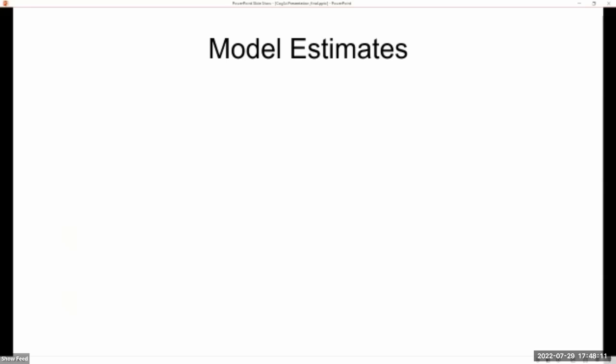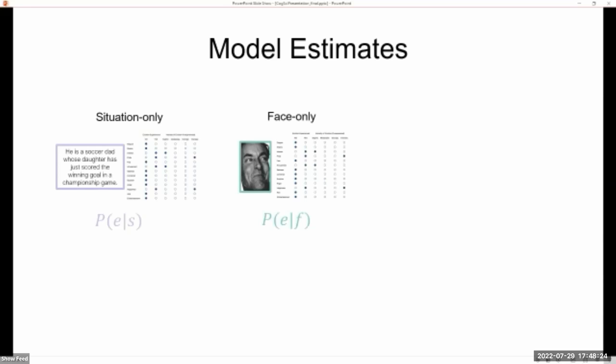So moving on for our analyses, we first compute the model estimates. So ratings from the situation-only condition are used to capture people's beliefs that situations lead to emotions. Ratings from the face-only condition are used to capture beliefs that emotions lead to these expressive behaviors. Finally, the combination of these, along with people's prior expectations, are used to compute the cue-integration model estimates.